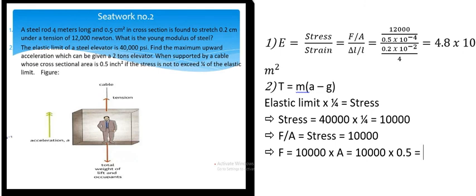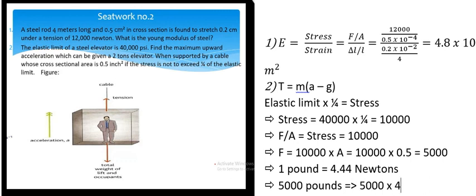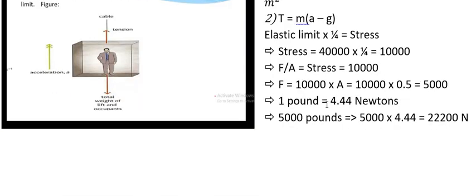This gives about 5,000. The force in this situation is in pounds, and we know that 1 pound is about 4.44 newtons. So we have 5,000 pounds, and we use 5,000 multiplied by 4.44, which gives about 22,200 newtons.